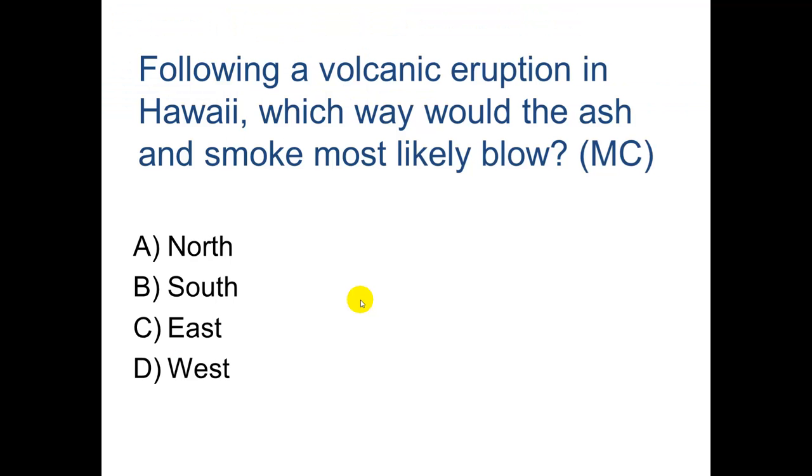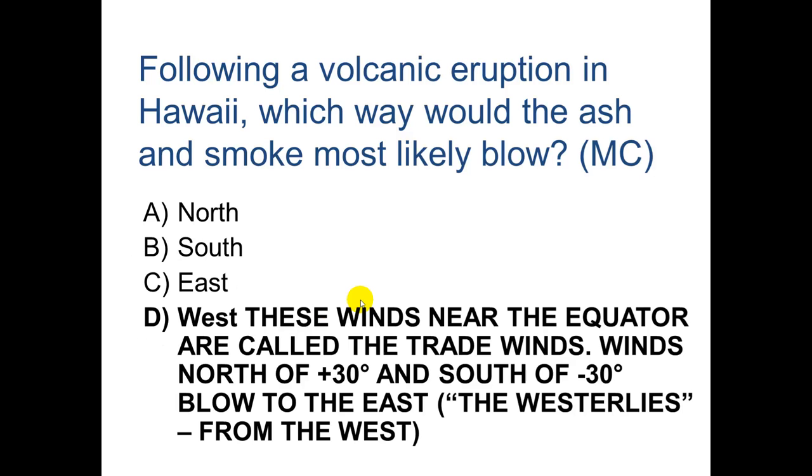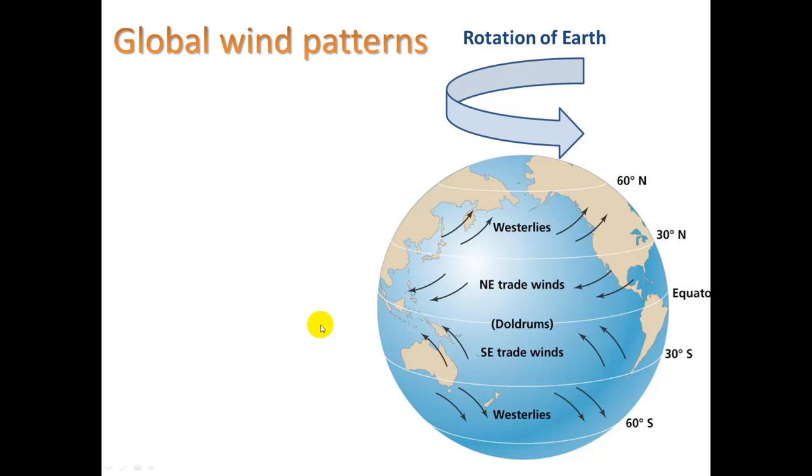Following a volcanic eruption in Hawaii, which way would the ash and smoke most likely blow? All right. So did you say west? If you did, that's correct. These winds near the equator are called the trade winds. Winds north of positive 30 degrees latitude and south of negative 30 degrees latitude blow to the east. And blowing to the east, those are actually called westerlies, meaning they are from the west. And so we can see that diagram here. Along the equator, winds are blowing from the east to the west. We call them the trade winds. I don't know why they're not called the easterlies.